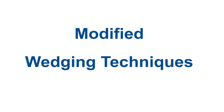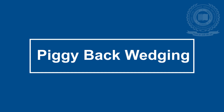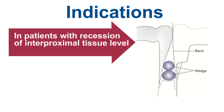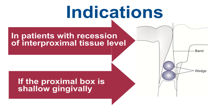Moving on to modified wedging techniques. First is piggyback wedging. In this system, if the wedge is significantly apical of the gingival margin, a second — usually smaller — wedge may be piggybacked onto the first wedge so that the matrix is stabilized against the margin. Piggyback wedging is particularly useful in patients with recession of interproximal tissue level or if the proximal box is shallow gingivally.